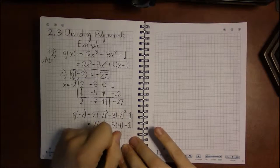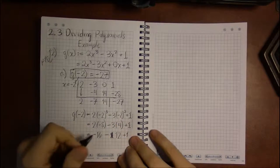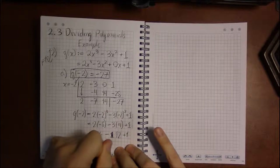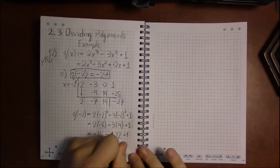So 2 times minus 8 is minus 16. Minus 3 times 4 is minus 12. Minus 16 minus 12 is minus 28. And when we add 1, we get minus 27.